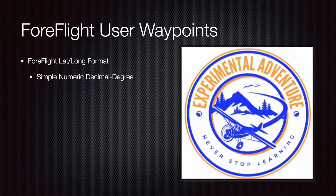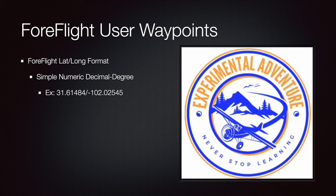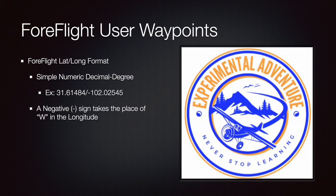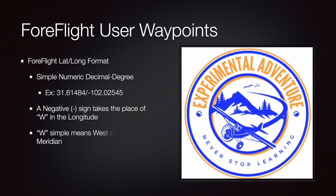Here is an example. The first number is positive and it is followed by a forward slash, and the second number begins with a negative number. A negative sign takes the place of the letter W, which is used in the degrees, minutes, and seconds format. The W simply stands for west of the prime meridian.